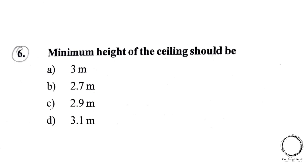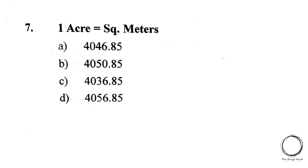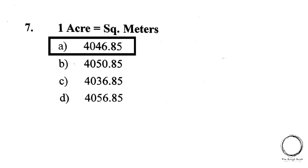Next question: The minimum height of a ceiling should be — A) 3 meters, B) 2.7 meters, C) 2.9 meters, D) 3.1 meters. The correct answer is A) 3 meters. Next question: 1 acre equals how many square meters? A) 4046.85, B) 4050.85, C) 4036.85, D) 4056.85. The answer is A) 4046.85.